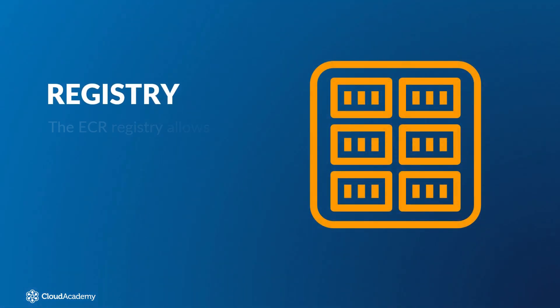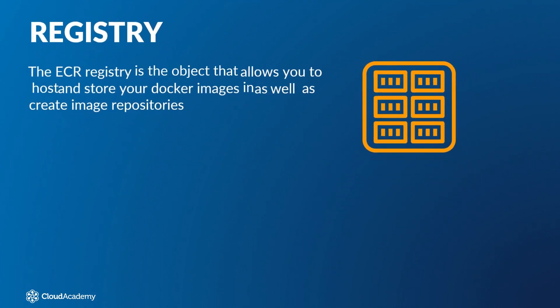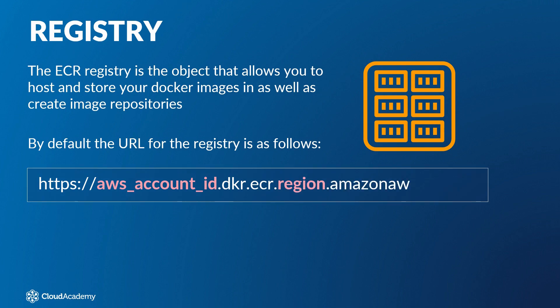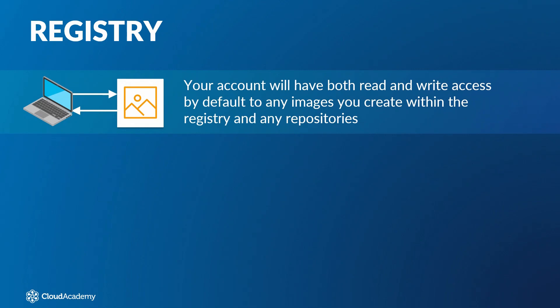The ECR registry is the object that allows you to host and store your Docker images as well as create image repositories. Within your AWS account you will be provided with a default registry. When your registry is created, the default URL for the registry follows a standard format, where you will need to replace the red text with your own account and region information. Your account will have both read and write access by default to any images and repositories you create within the registry.